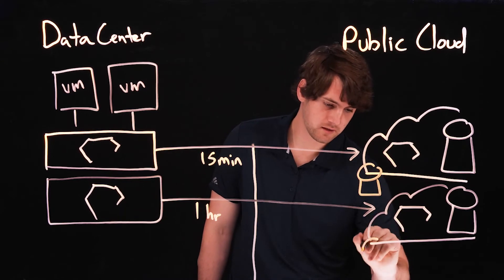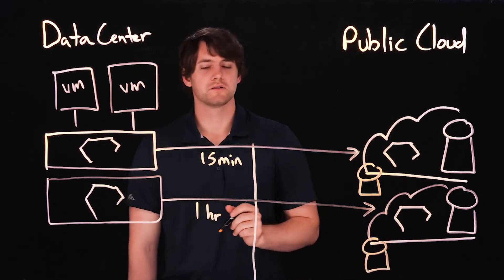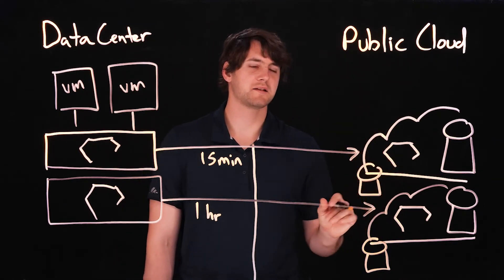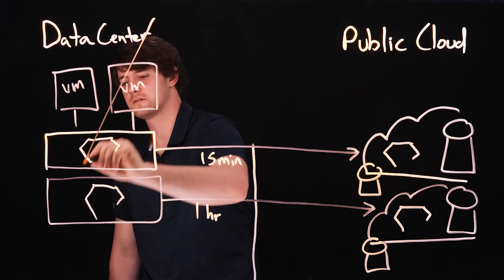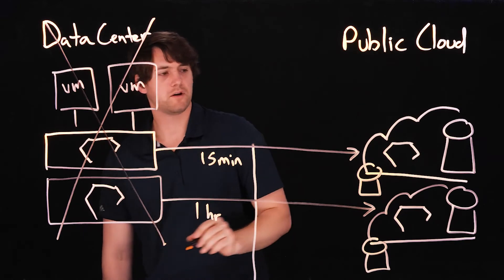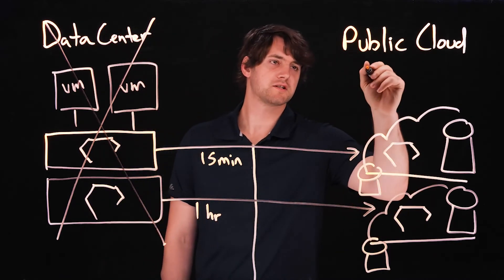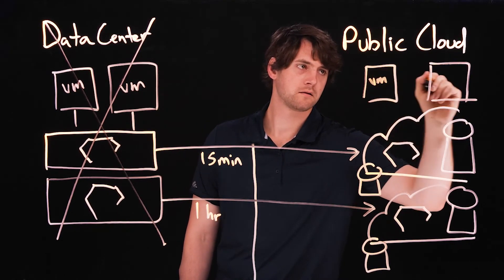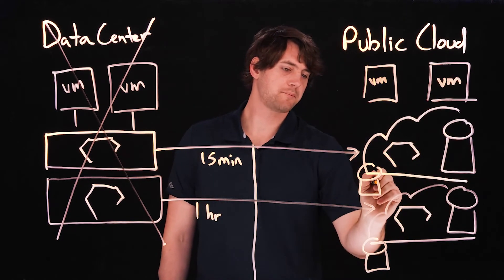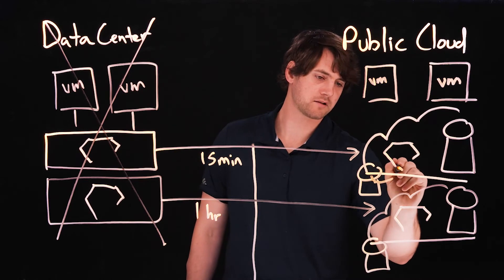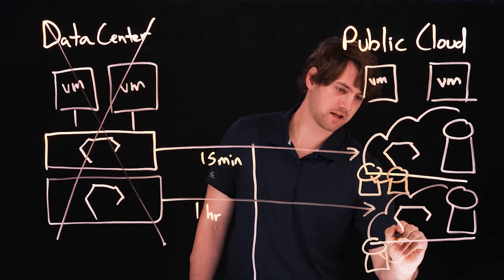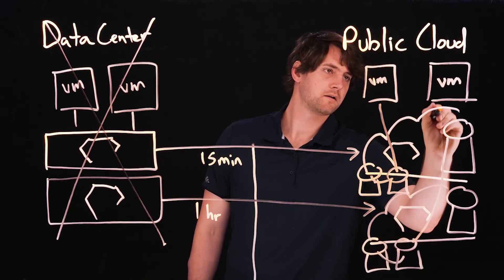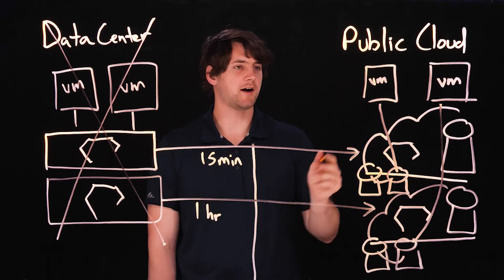I'll just draw a couple of volumes over here to represent that. So what happens then — very similar to if you had another data center — the expectation here is that if you lose this first data center, you can have automation here which can spin up virtual machines in the cloud. And then you can copy out from the snapshots that were replicated up to the cloud, volumes with the exact same data on them. And you can mount those data volumes up to your VMs in the public cloud and begin operating your application again.